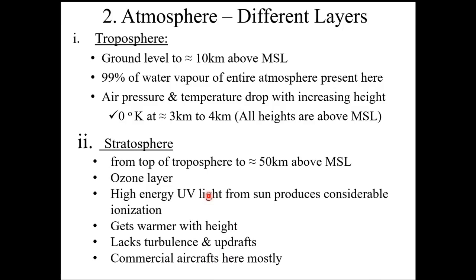The air pressure and temperature in this region drops with increase in height. Ground level temperature can vary from zero degrees in the Arctic, even subzero, and in the tropics it can go up to 30 to 40 degrees centigrade.